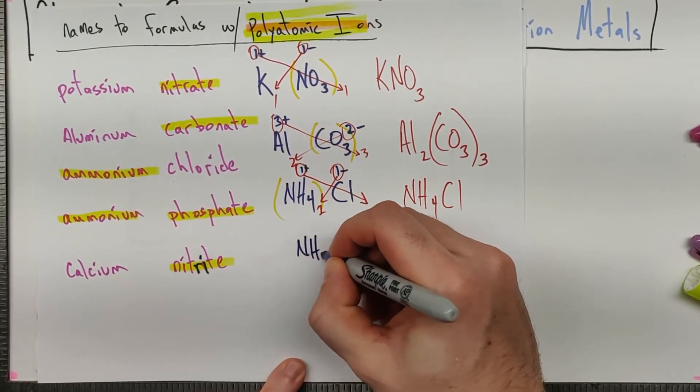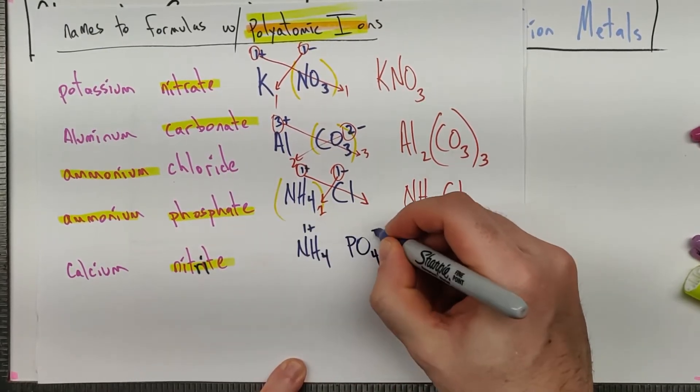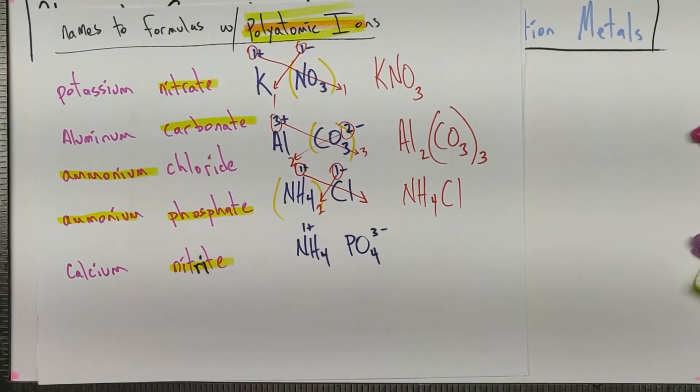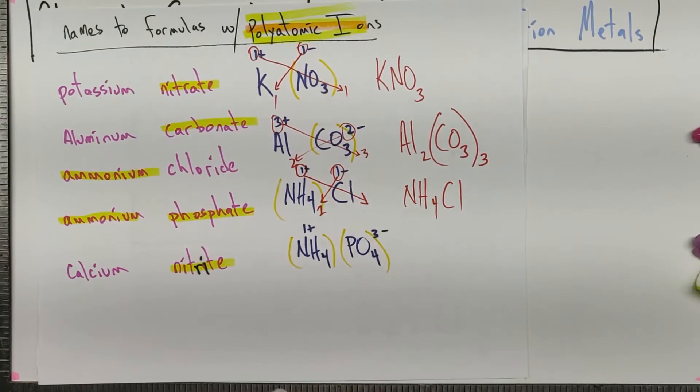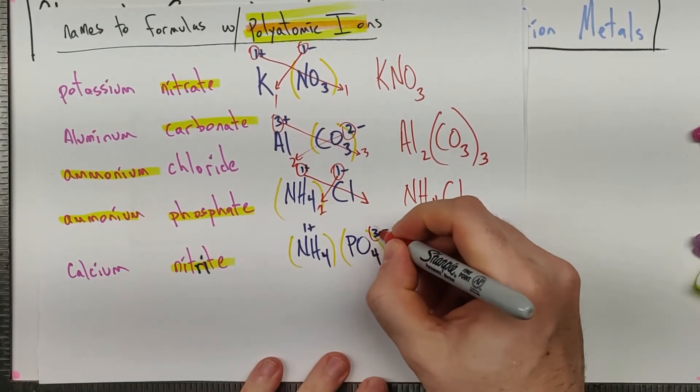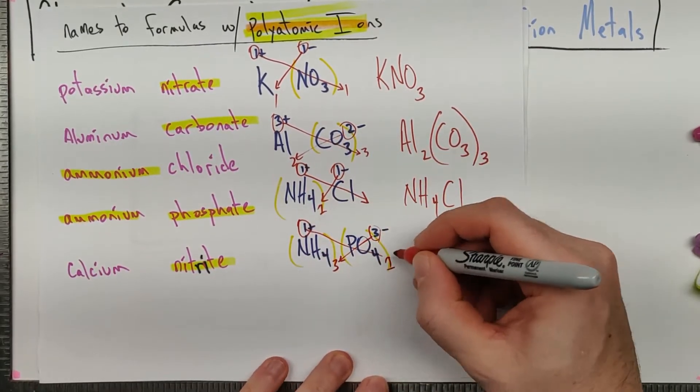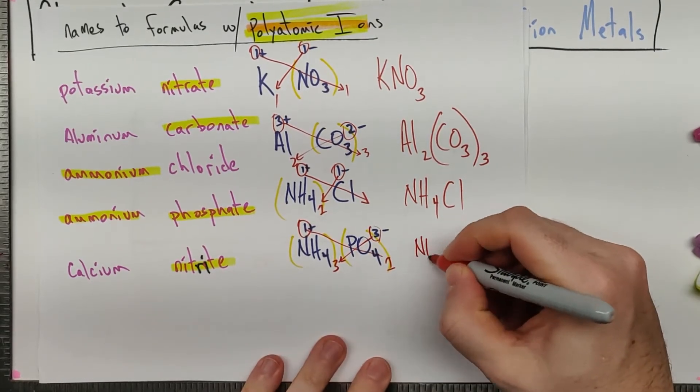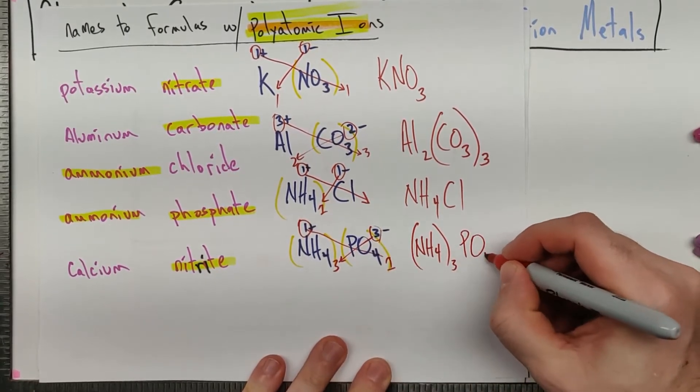Ammonium, once again, NH4. It's a one plus. Phosphate is PO4 with a three minus. And if you're saying, where did that come from? The answer is a list of polyatomic ions. Both of those things are polyatomic ions. So I'll start out with parentheses around both of them. I'm going to take this three, bring it down there. I'm going to take the one and bring it down there. And it turns out we do need that parentheses on the ammonium. So we have (NH4)3, but I don't need around the phosphate, PO4.